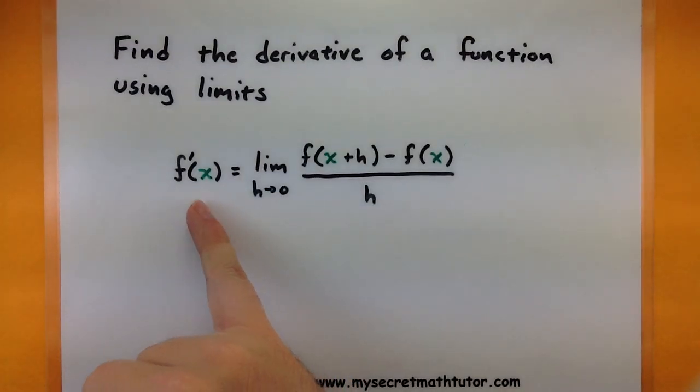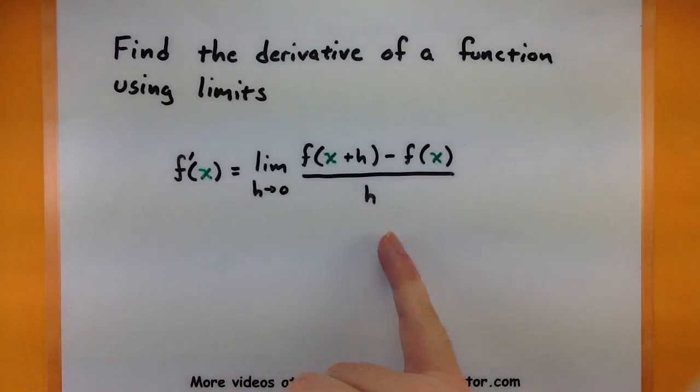So remember that when we're taking the derivative of a function, we need to compute the difference quotient and look at the limit as h goes to zero. And what we'll end up with when we're all done is a new function that represents the derivative.